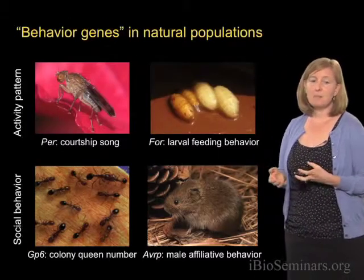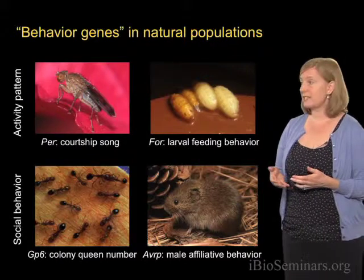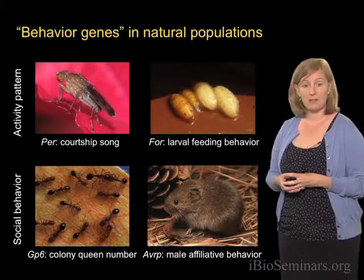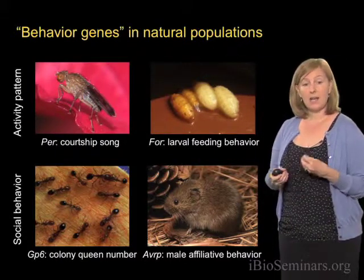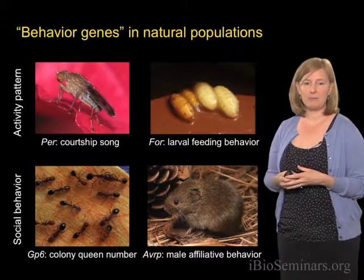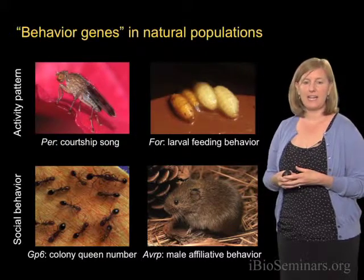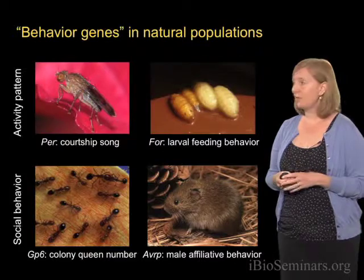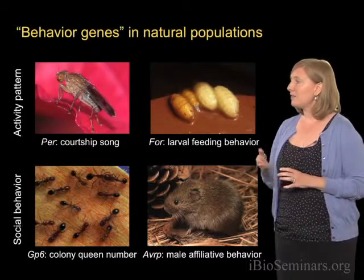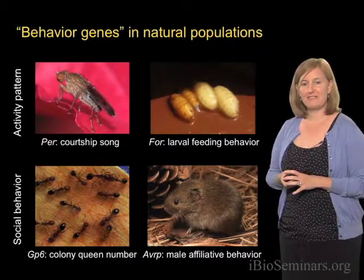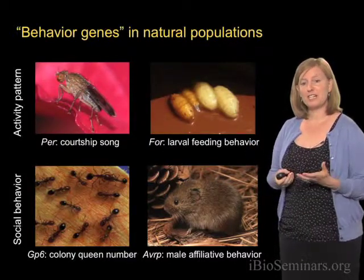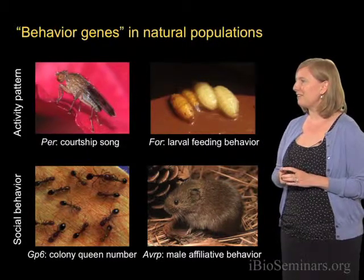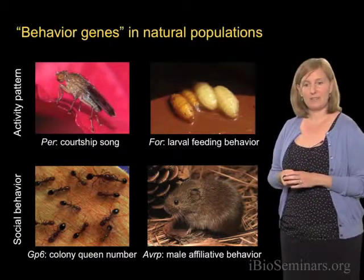For example, we know that amino acid changes in the period locus affects courtship song, which in turn affects mating behavior in two different species of Drosophila. We also know that changes in the expression of the gene foraging in these adorable little Drosophila larvae affects feeding behavior.